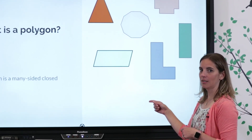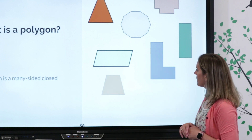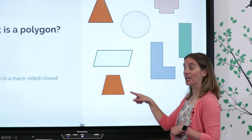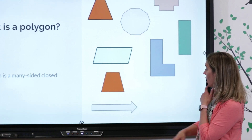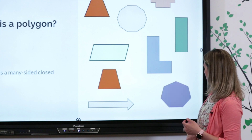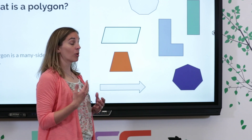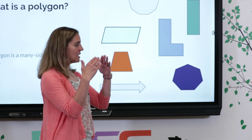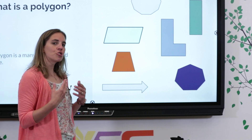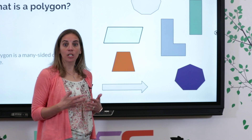Anybody know what this one's called? If you're thinking parallelogram, you're right. How about this one? That's a trapezoid. And this last one looks sort of like that stop sign but not quite. What I notice about all of these shapes is that anytime there's a corner or a point, all the sides meet. That's what it means when it says a closed figure. So I'm going to show you lots of different types of shapes and we're going to decide whether or not it's a polygon.